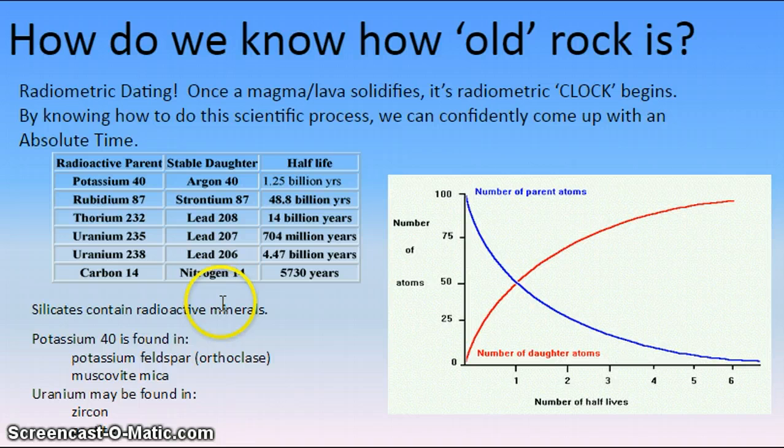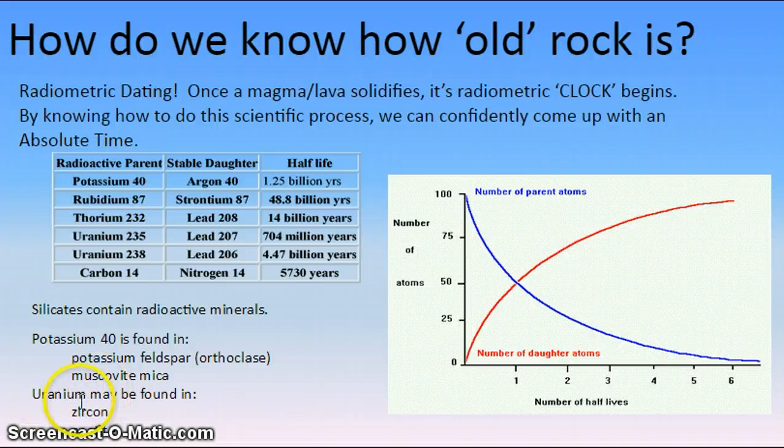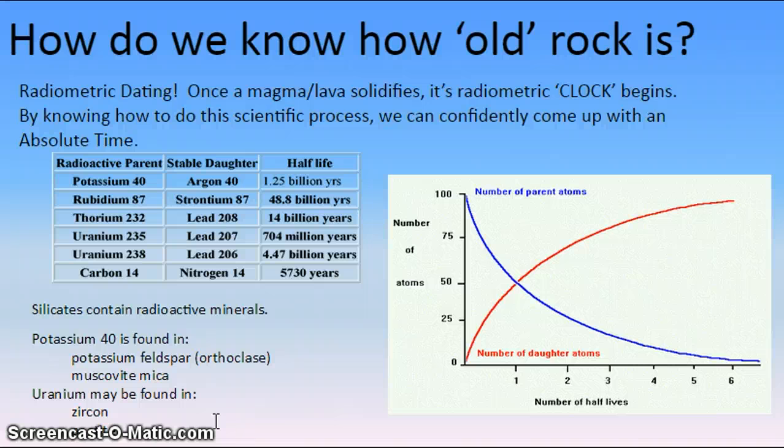Silicates contain radioactive minerals. Potassium-40, potassium feldspar, is very common in igneous rocks. Muscovite mica contains radioactive potassium-40. Uranium can be found in both zircon and apatite, two different minerals here. So this last little video should help drive home this same concept of the very idea that we've looked at here.